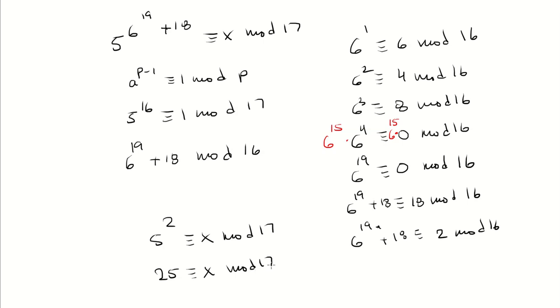What's the remainder when I divide 25 by 17? It's going to be 8. So 25 is congruent to 8 mod 17. The answer is 8.